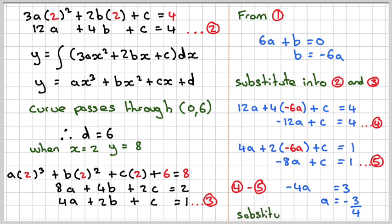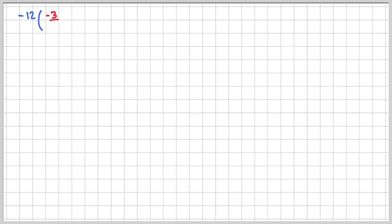Substituting that back into equation 4 gives c. Minus 12 times minus 3/4 plus c equals 4. 4 goes into 12 three times, so minus 3 times minus 3 gives 9 plus c equals 4, giving c equals minus 5.